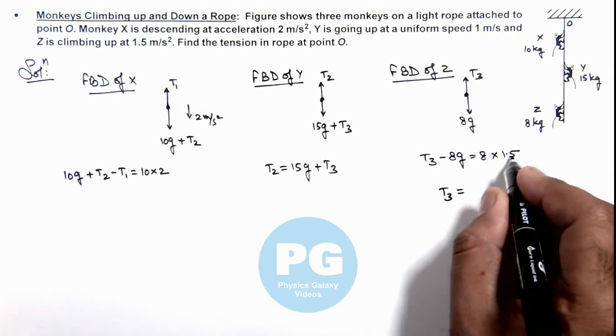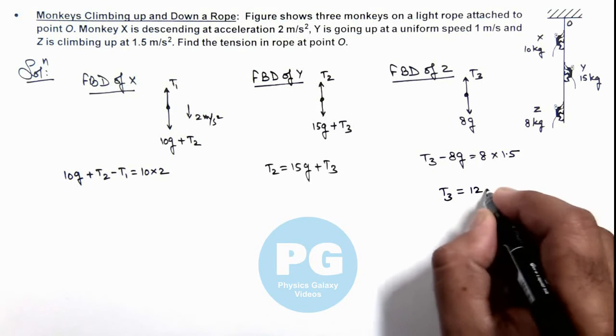So if we simplify this equation it will give us the value of T3. So 8 multiplied by 1.5 is 12 plus this is 8g, we are taking g as 10.